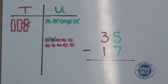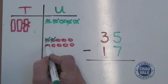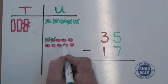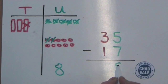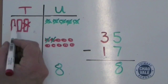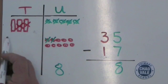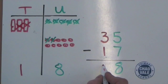We count how many are left: one, two, three, four, five, six, seven, eight. And we write this in the units column. After that we subtract one ten, count how many are left, and write that in the tens column.